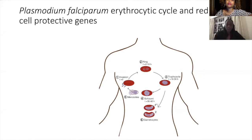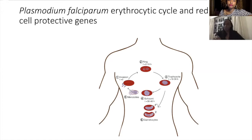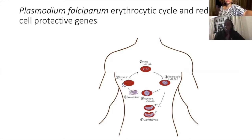This cycle takes a total of 48 hours. The blood stage is the phase of the malaria parasite that causes all of the serious symptoms we see in people. Malaria has had a huge impact on the human genome over the last 5,000 years. It causes a lot of death and has therefore led to the positive selection of human genes associated with protection from malaria infection.